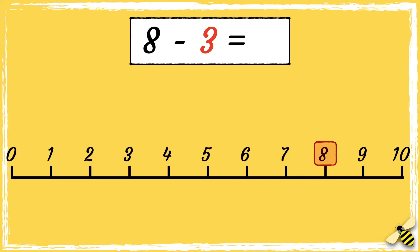8, and because we're taking away 3, we need to jump three digits backwards: one, two, three. We've landed on